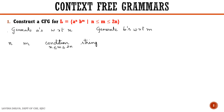Now we take n = 0 as well as m = 0. The condition is n ≤ m ≤ 2n. Is the condition satisfied? Yes, the condition is satisfied. So what is the string which is generated? It is epsilon. So we can consider epsilon as our minimum string.